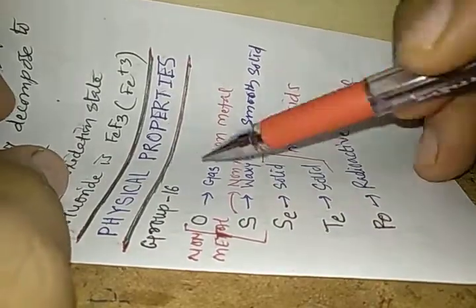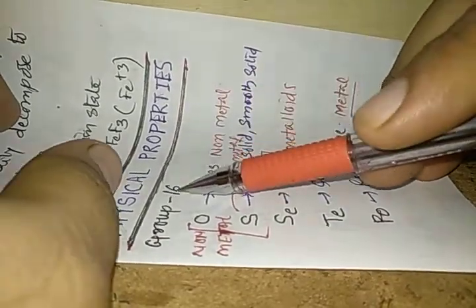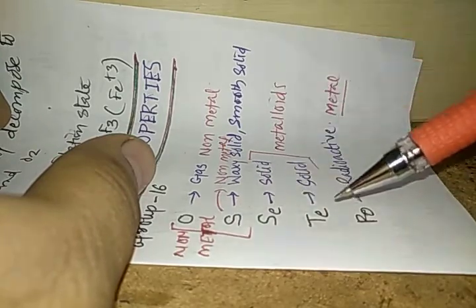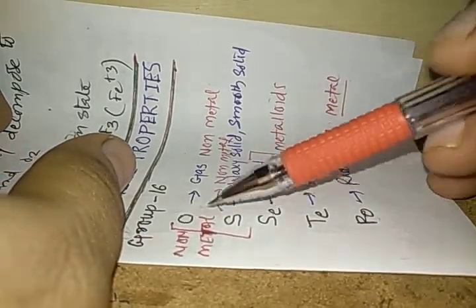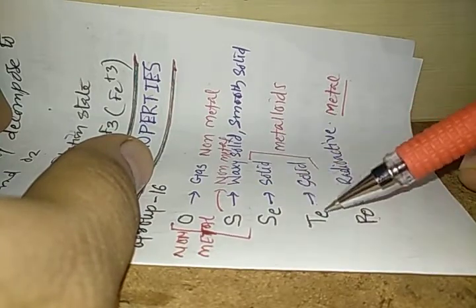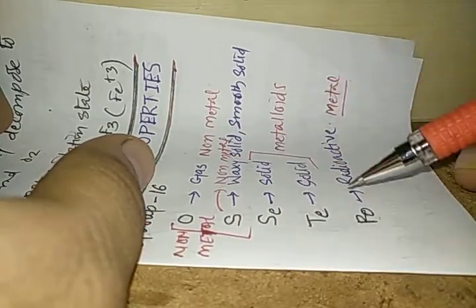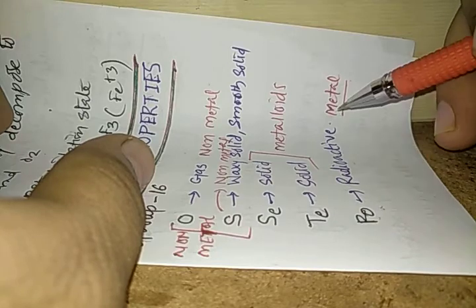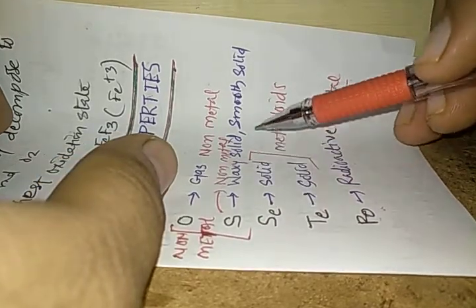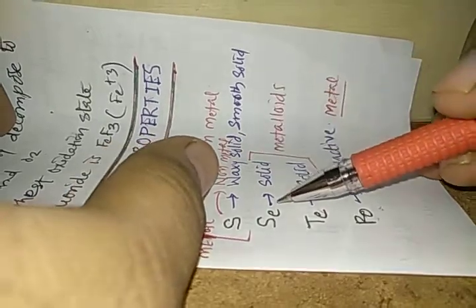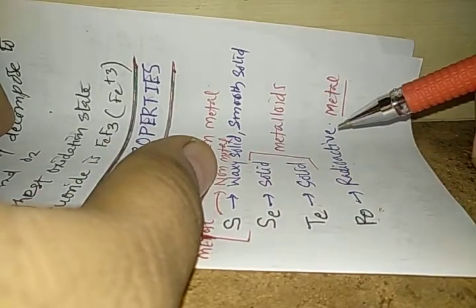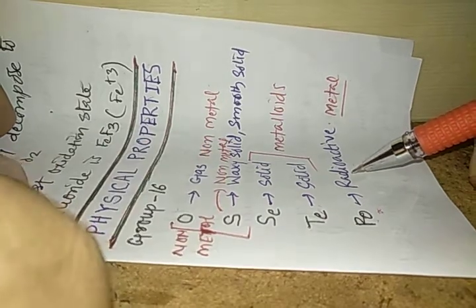Now we should study the physical properties of Group 16 elements: oxygen, sulfur, selenium, tellurium, and polonium. Oxygen and sulfur are non-metals, whereas selenium and tellurium are metalloids, and polonium is a radioactive metal. Oxygen is a gas, whereas sulfur is a waxy solid. Selenium and tellurium are solids, and polonium is also a solid but it is a radioactive substance.